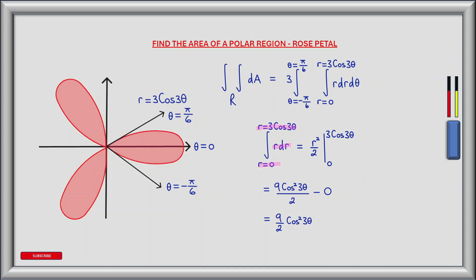The antiderivative of r is r squared over 2, evaluated between 0 and 3 cos 3 theta. Plugging in 3 cos 3 theta for r gives 9 cos squared 3 theta divided by 2, and plugging in 0 gives minus 0. So this evaluates to 9 divided by 2 multiplied by cos squared 3 theta.